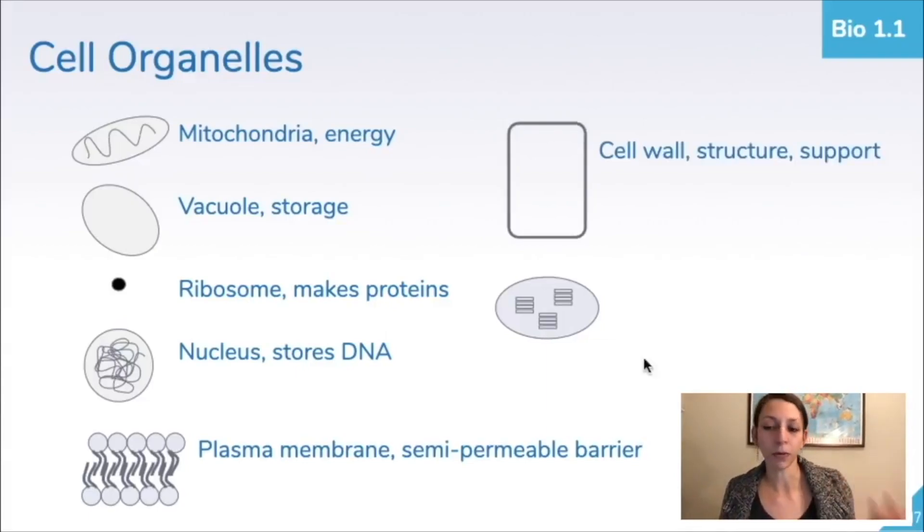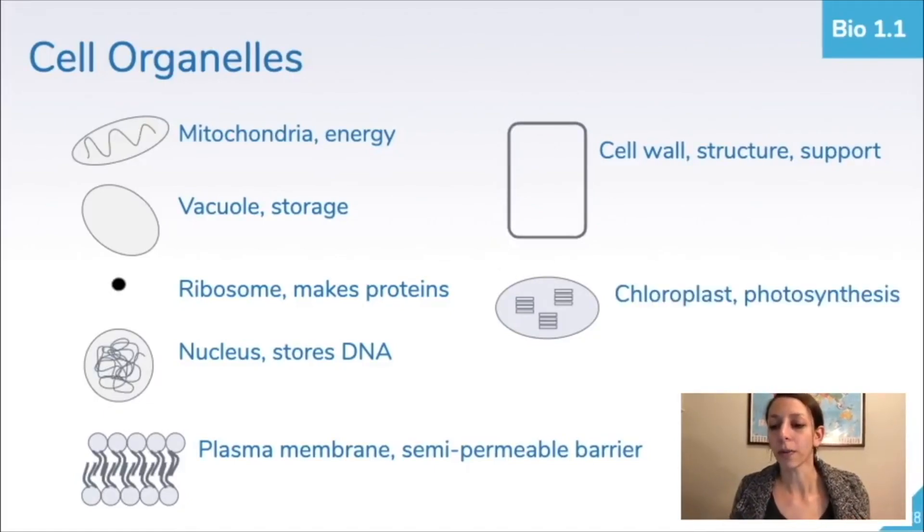Our cell wall is going to provide structure and support, another layer of protection of the cell, again, not in animal cells, and it's going to be kind of geometric in shape. And our chloroplast is the site of photosynthesis, only in plant cells, so we're not going to see these in animal cells.